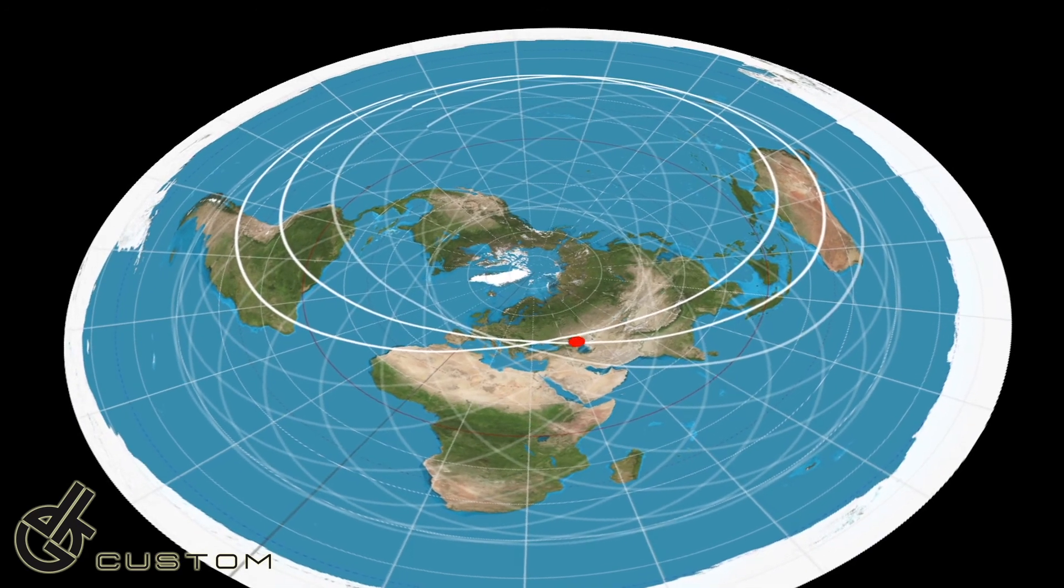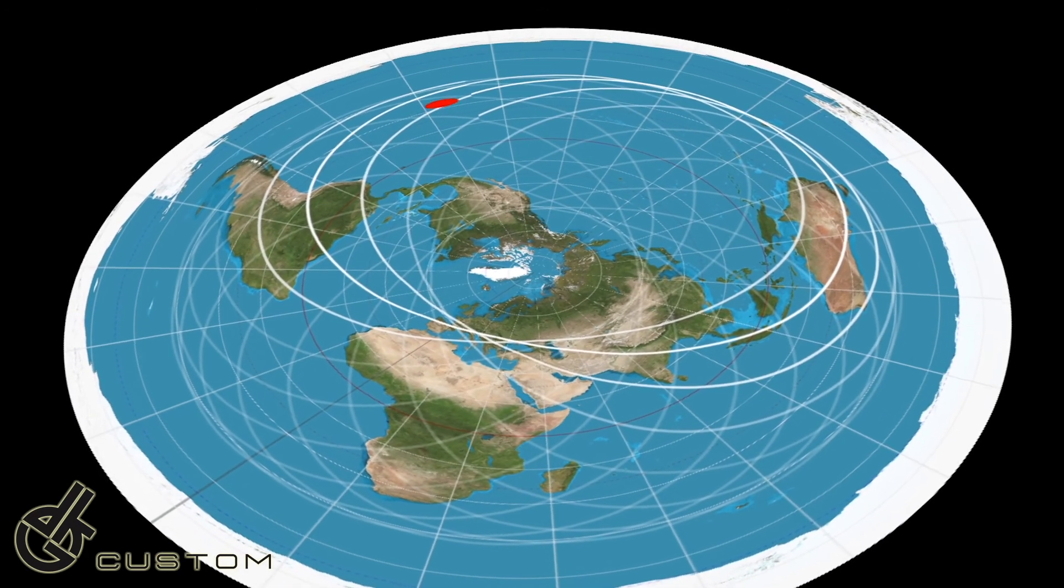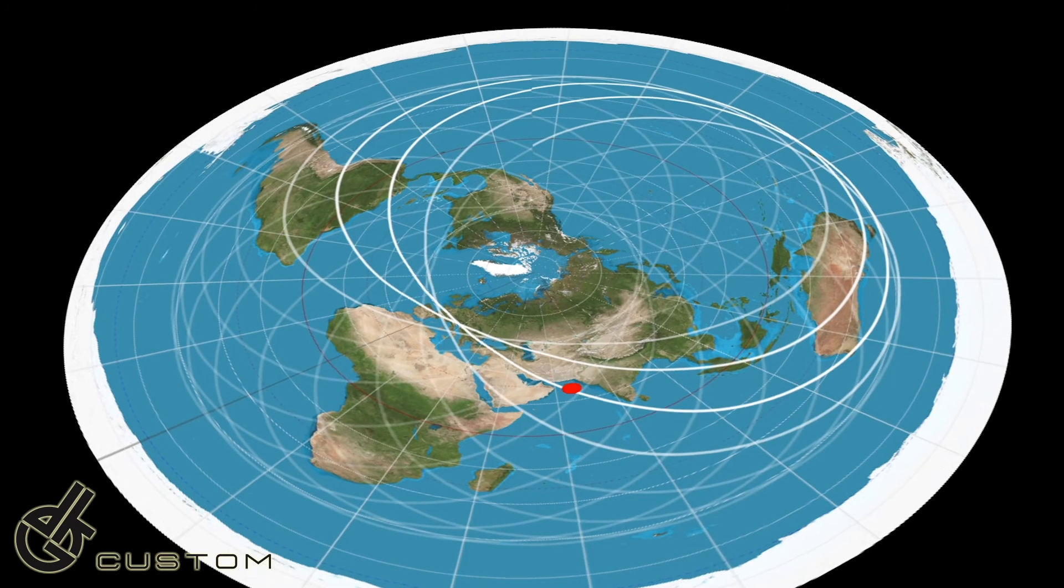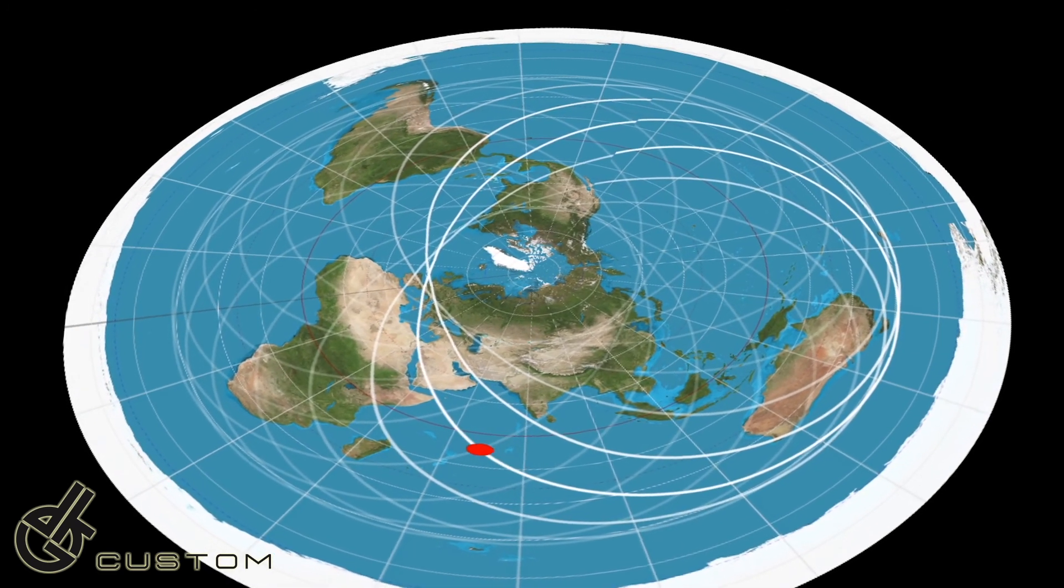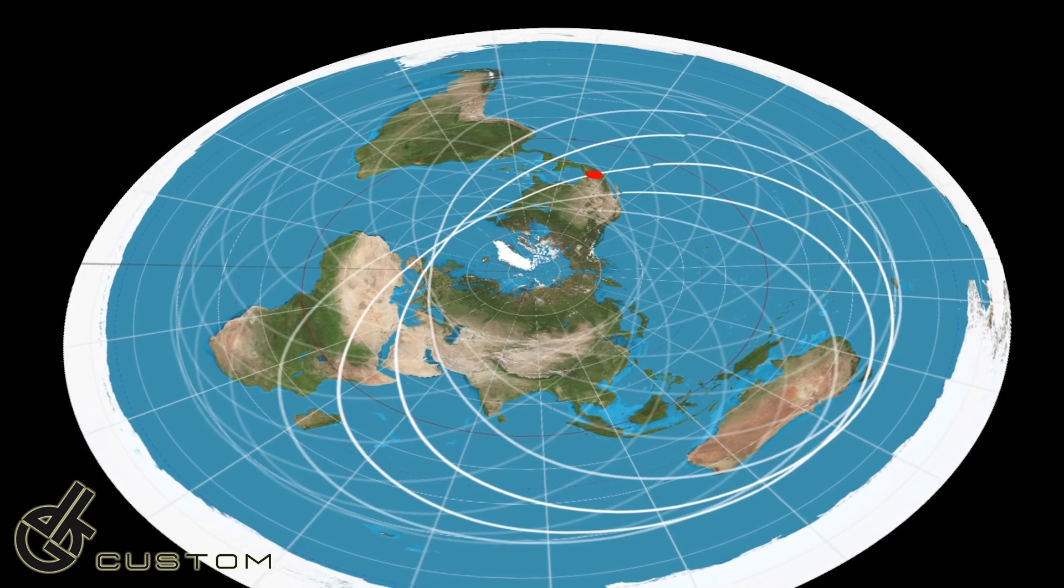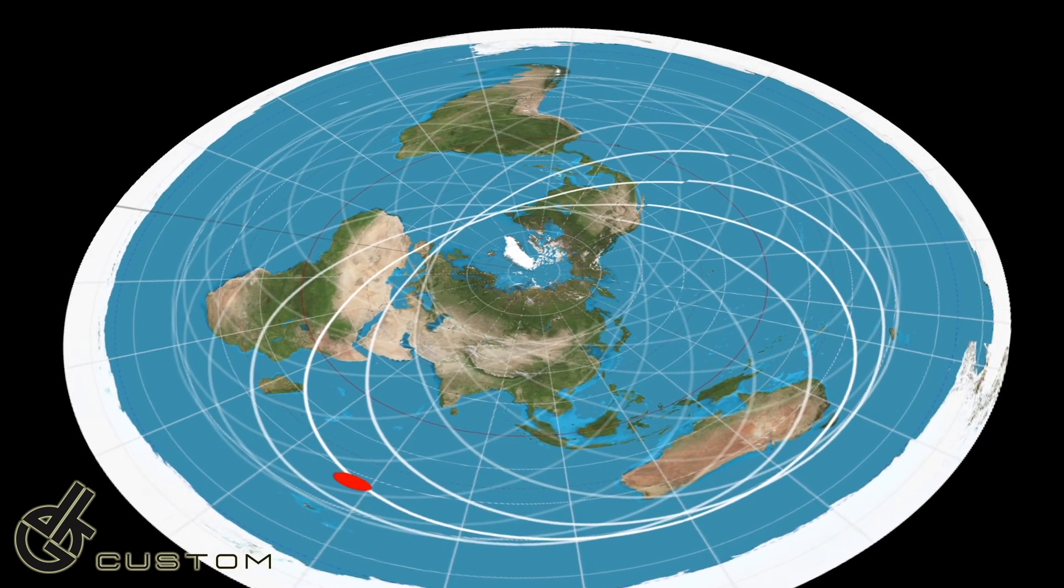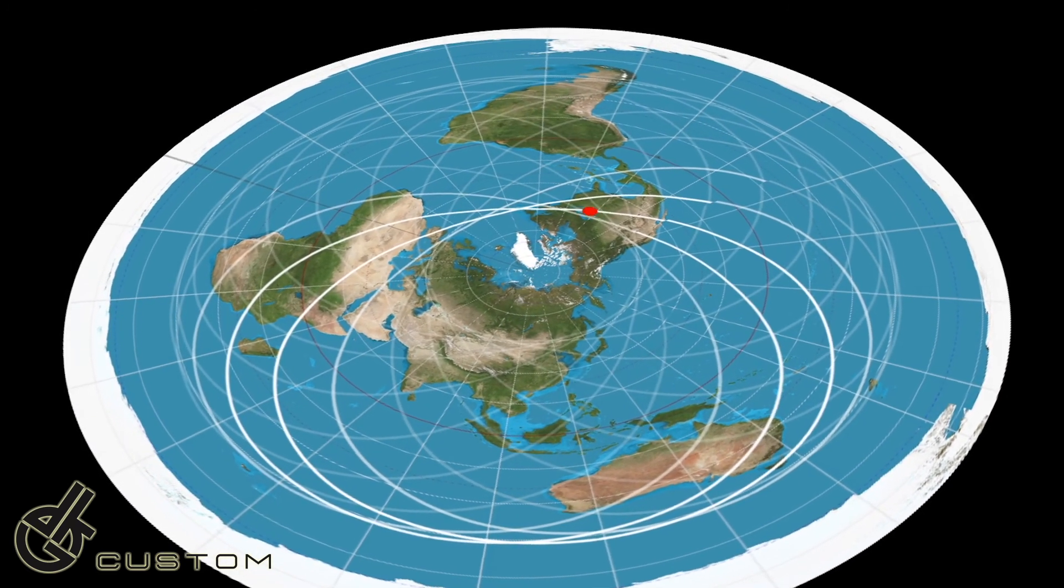Immediately we see a problem. For the ISS to be in the predicted and verifiable positions, it has to accelerate below the equator and decelerate above the equator, something that plainly does not happen. There are no observations of the ISS streaking across the sky at high speed.